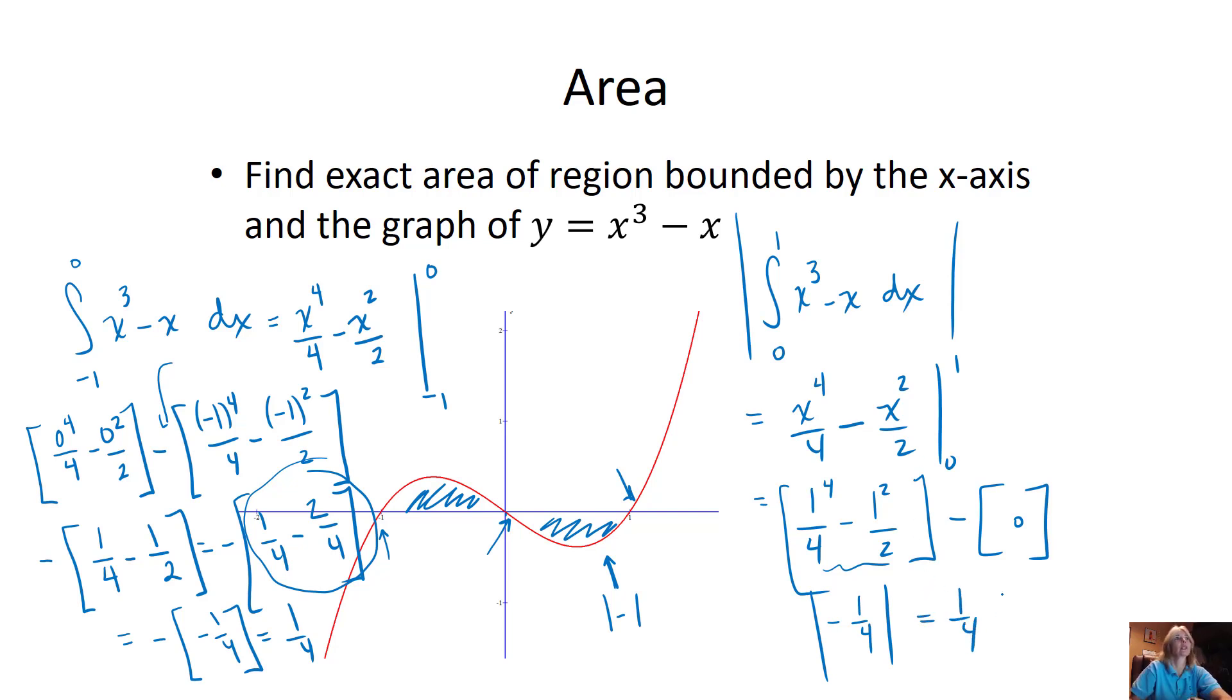So in other words, if my dog would stop barking - in other words, these two pieces, this area is 1/4, and this area is 1/4. So I add the two pieces, I get 2/4, or an area of 1/2 for my final answer.